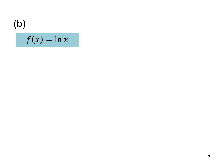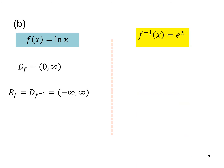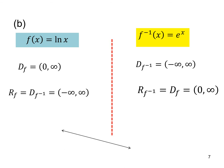For f(x) = ln(x), the domain is x greater than zero, which is (0, ∞), and the range is all real numbers, negative infinity to infinity. For f inverse x = eˣ, the domain is all real numbers, negative infinity to infinity, and the range is (0, ∞). We can confirm that domain of F equals range of F inverse, and range of F equals domain of F inverse.